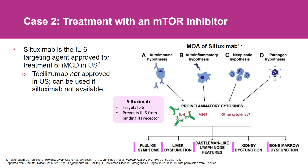Unfortunately, siltuximab doesn't work for everyone. If a patient does not respond to or progresses on IL-6 blockade, and they're very severe, we recommend chemotherapy. If they're not yet in a severe category, that's where immunomodulators like mTOR inhibitors such as sirolimus and drugs like rituximab can be considered for these anti-IL-6 refractory patients. In doing so, you're hitting other aspects of the immune system — even if IL-6 is not the driver, other cytokines play critical roles, and targeting signaling pathways like mTOR or JAK-STAT are other ways to dampen the cytokine storm.